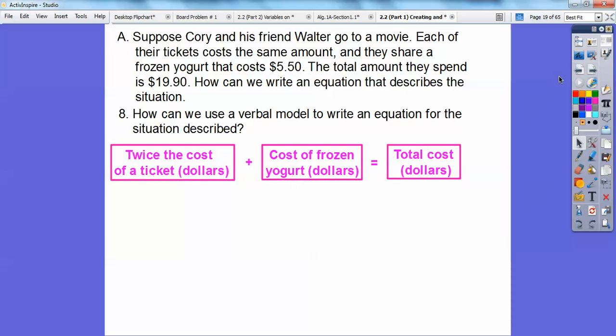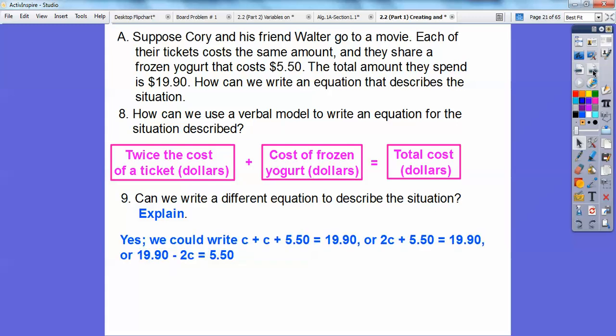How can we use a verbal model to write the equation for the given situation? Something like this: twice the cost of each ticket, so remember it's 2C, so C is the cost of the ticket plus that cost of that $5.50 yogurt equals the total cost $19.90. Can we write a different equation that describes that situation? Well yeah, there's all kinds. The best one is the one that we wrote, but we could have done C plus C plus $5.50 equals $19.90, or if we subtracted 2C from both sides then we get $19.90 minus 2C equals $5.50. I wouldn't have done that one. There's always another way to do that.